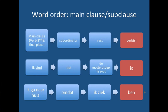So the word order in a main clause / subclause situation: in the main clause, verbs are in second place; and in the subclause, you have the subordinator, plus whatever the rest is, and then verb at the end. 'Ik vind dat de mosterdsoep te zout is' — all verbs at the end. 'Ik ga naar huis omdat ik ziek ben.' The subordinators trigger it, and the verbs are at the end of the clause.